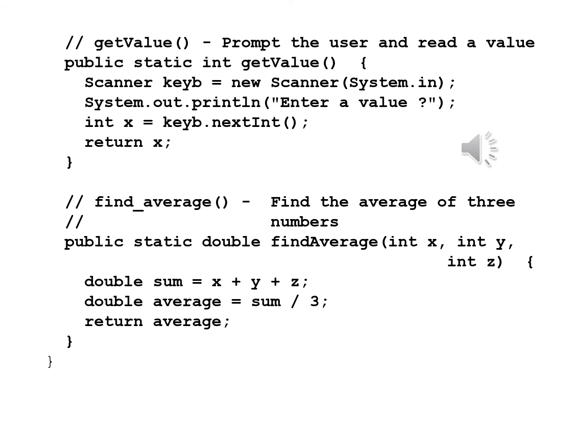Now we write the two methods that it uses. The opening comment: getValue, prompt the user and read a value. Public static int getValue open and close parenthesis open brace. Scanner keyboard equals new Scanner open parenthesis System.in close parenthesis semicolon. Then System.out.println open parenthesis quote enter a value question mark close quote close parenthesis semicolon. Int x equals keyboard.nextInt open and close parenthesis semicolon. And lastly, return x semicolon, and a close brace for the method.